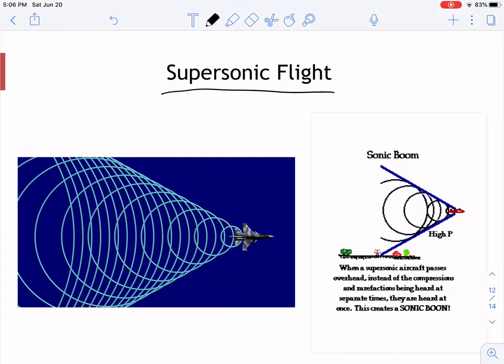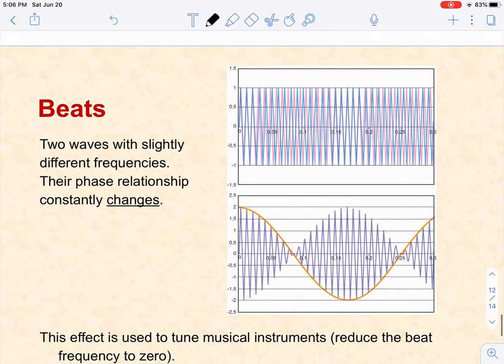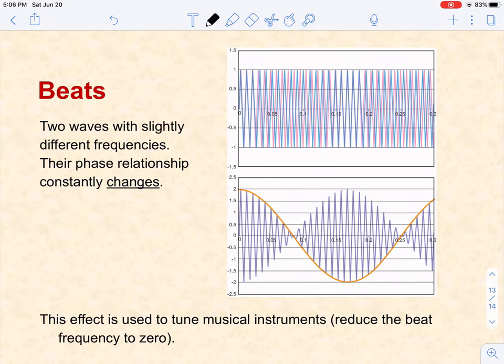Meaning that the jet outpaces the sound wave it is producing. When that occurs, you have some cone shape here, like you're seeing depicted here, where there's constructive interference and all of these compressions and rarefactions can be heard at once, and that's what we would call a sonic boom.